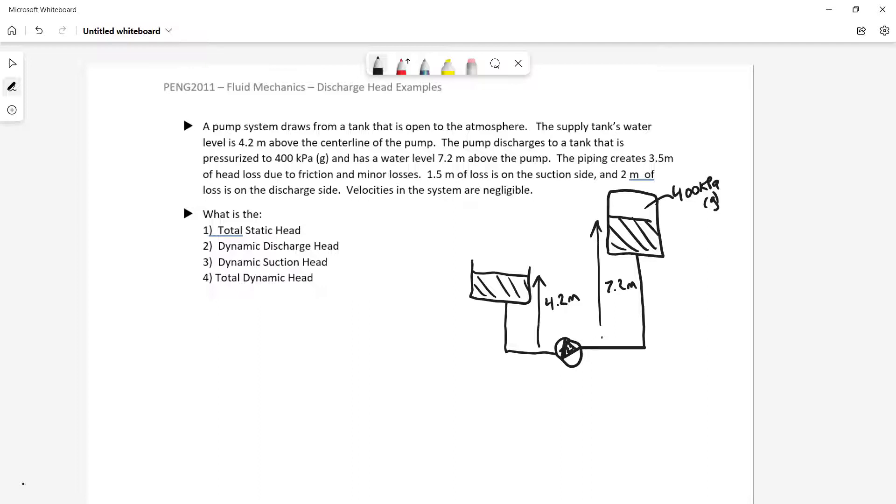We have 3.5 meters of friction, and that's broken out so that 1.5 of it is on the suction side. And on the other side, my head loss on the discharge side is worth 2 meters. And I don't have any velocities in the system, so I'm not going to have to worry about calculating those. Okay, so we have a couple of calculations to do.